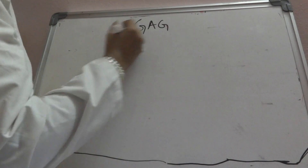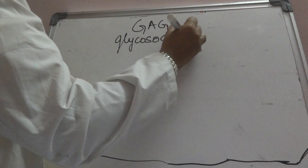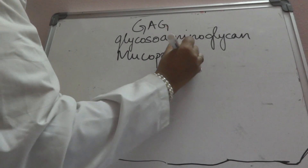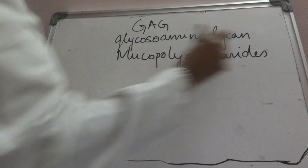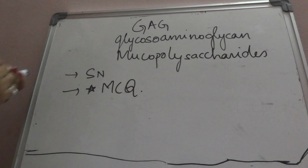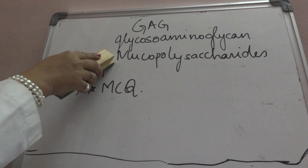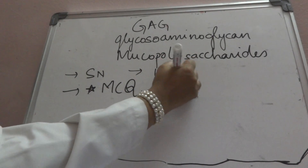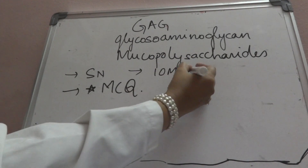Today we discuss an important molecule — glycosaminoglycan, also called mucopolysaccharides. It could be part of a short note, and it comes in multiple choice questions for pre-PG and other entrance exams. For postgraduates, it can be a short note of 10 marks, and for a UG student, it could be a short note of 4 marks.